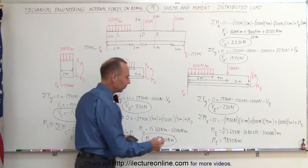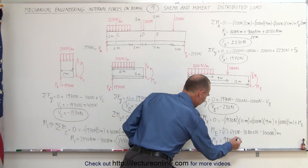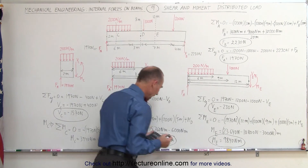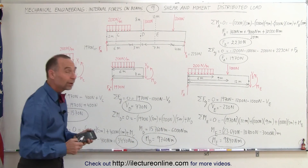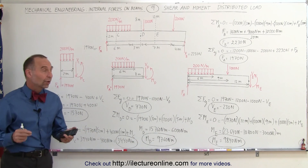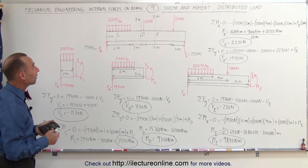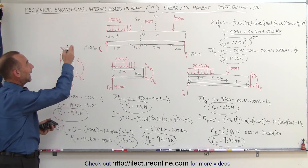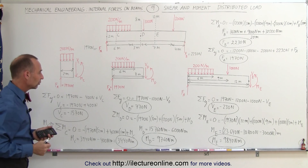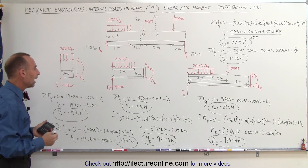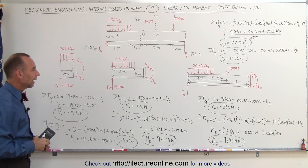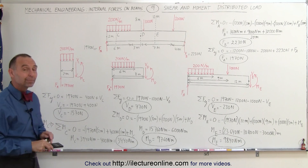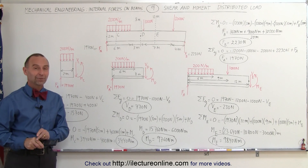We've now found the shear and the moment at each of the three locations on a beam that has both point loads and distributed loads. That's how you solve for shear forces and moments at various cross-sections.